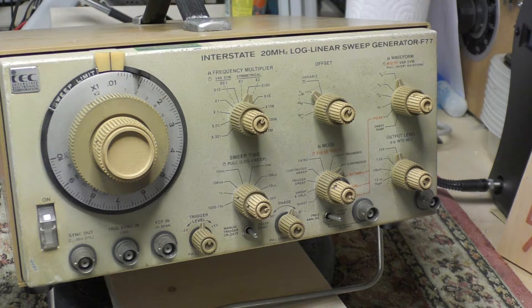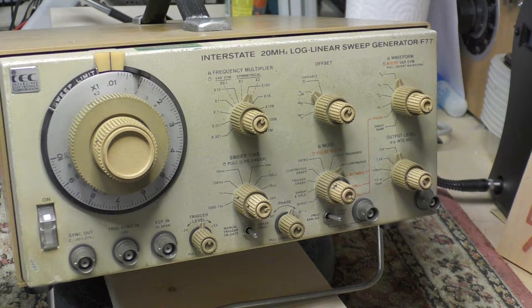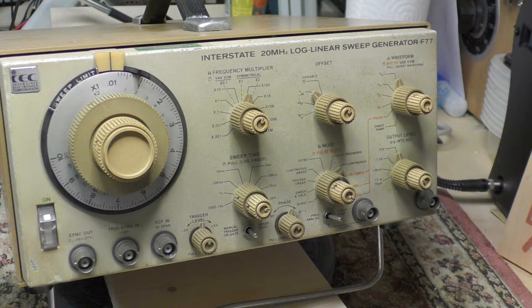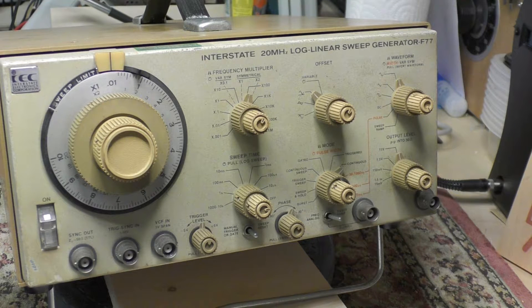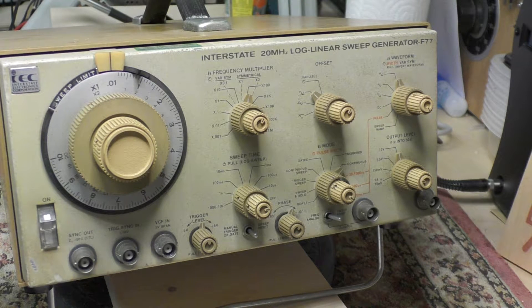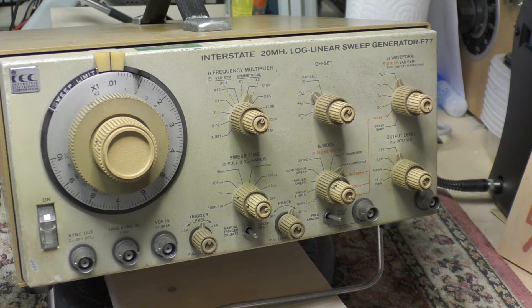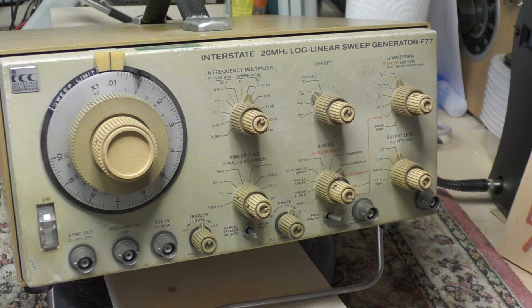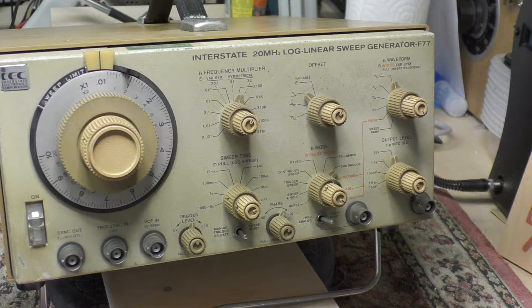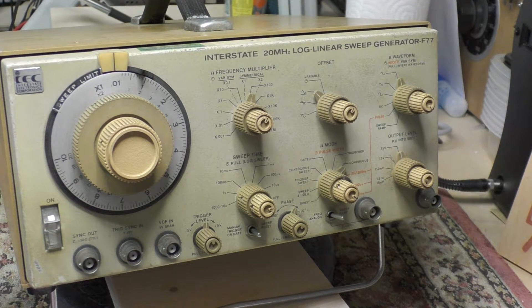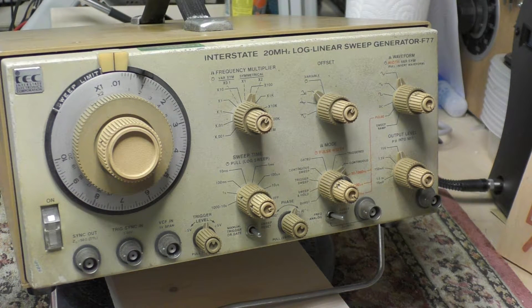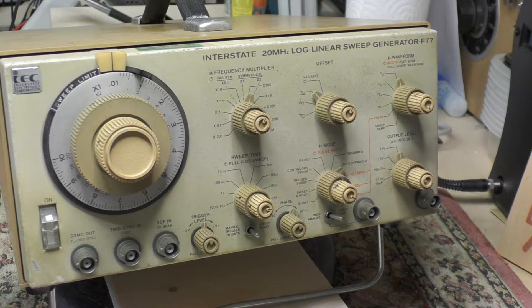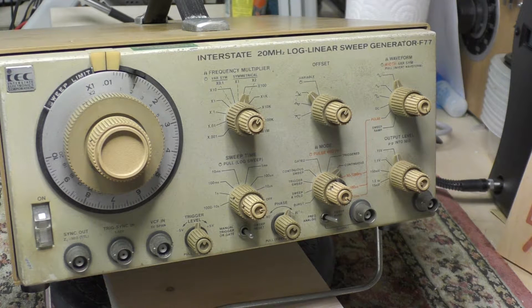Hey guys, here is the latest addition to the test equipment in the workshop. This is the Interstate F77 wobulator or sweep generator. It's an eBay purchase for about 40 bucks. According to the seller it came out of a lab and it was working. We will find out in due course.